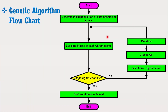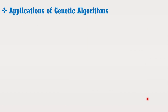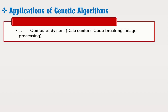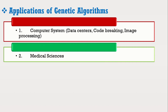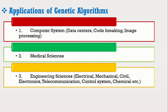Let's discuss the real-life applications of genetic algorithms. They can be used for very large applications in different areas such as computer systems, data centers, code breaking, image processing, medical sciences, and engineering sciences including electrical, mechanical, civil, electronics, telecommunication, control systems, and chemical engineering. There are still many other fields where genetic algorithms can be applied.